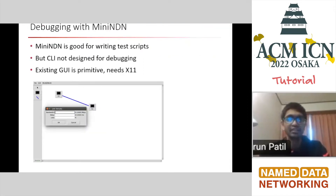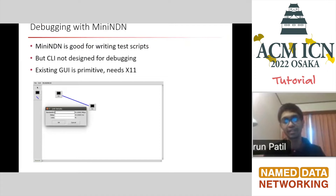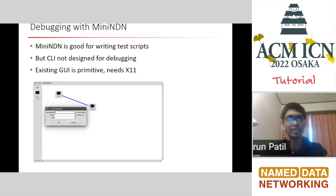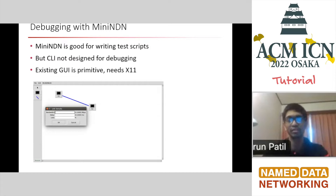Debugging with Mini-NDN: Mini-NDN is really good for writing test scripts. Like the script I wrote, I defined a certain experiment and then just run a script, and it's going to run the whole experiment, and I just study the logs later. The CLI can be used to do some simple things, but it's not really designed for debugging on a bigger scale. If you just run something on one node, it's going to block up the CLI, and then you can't run something on another node, because you have to put the first thing in background first.